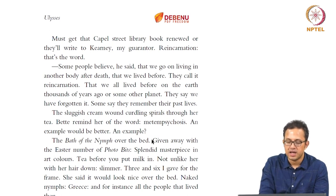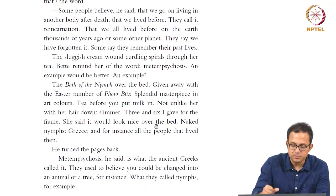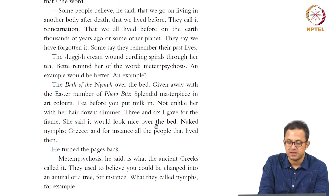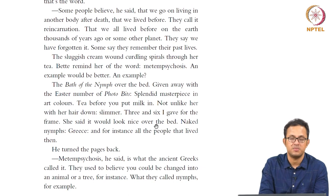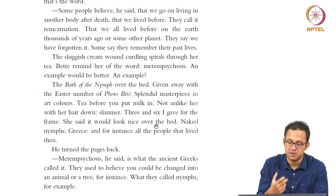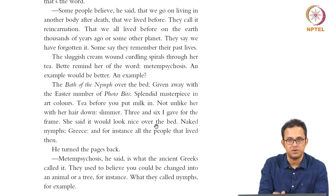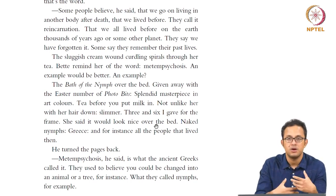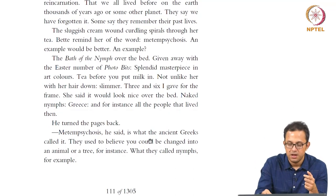'Tea before you put milk in. Not unlike her with the hair down.' She said it would look nice over the bed. 'Naked nymphs. Greece.' The reference to Greece is important. 'Metempsychosis,' he said, 'is what the ancient Greeks called it. They used to believe that you could be changed into an animal or a tree for instance — what they call nymphs.' He is trying to give an example, and the obvious example is a Grecian, Hellenic example. That obviously connects the modern Ulysses — the Dublin Ulysses — to the original Hellenic myth. Metempsychosis is a metaphysical transition or transmutation of souls which is being talked about here.